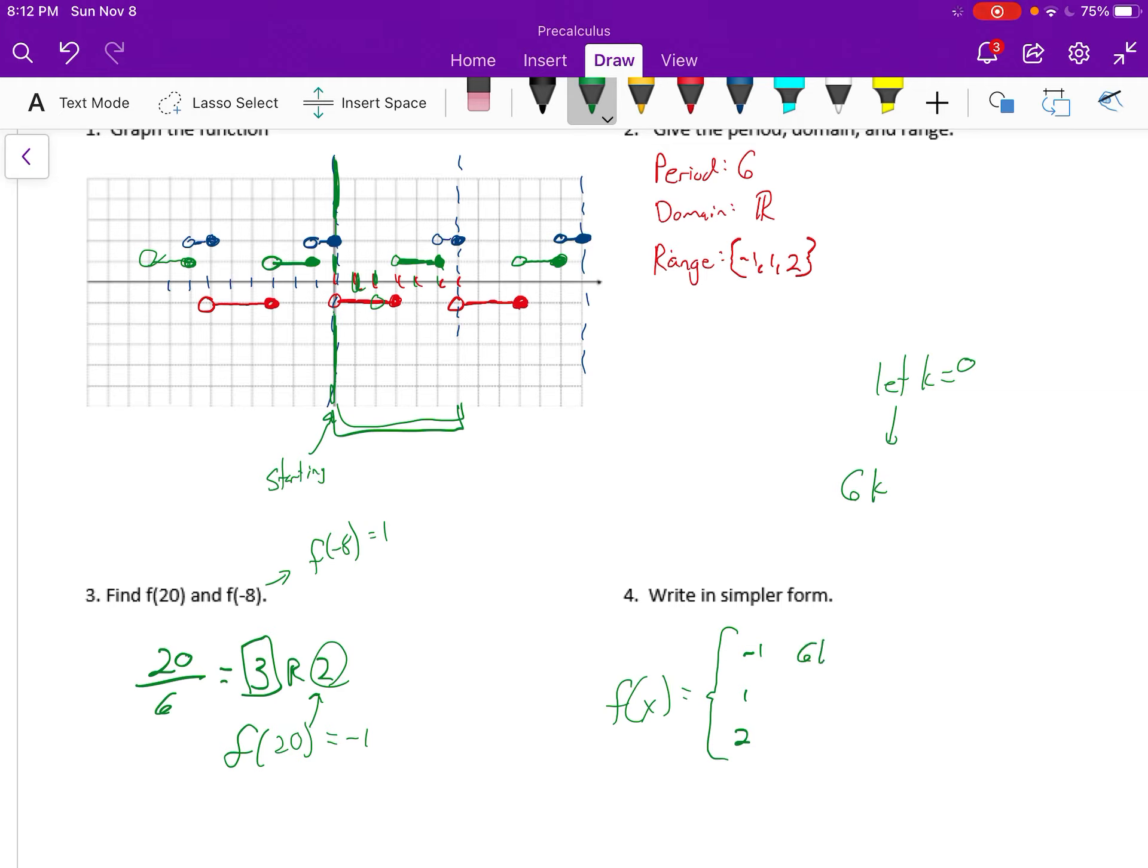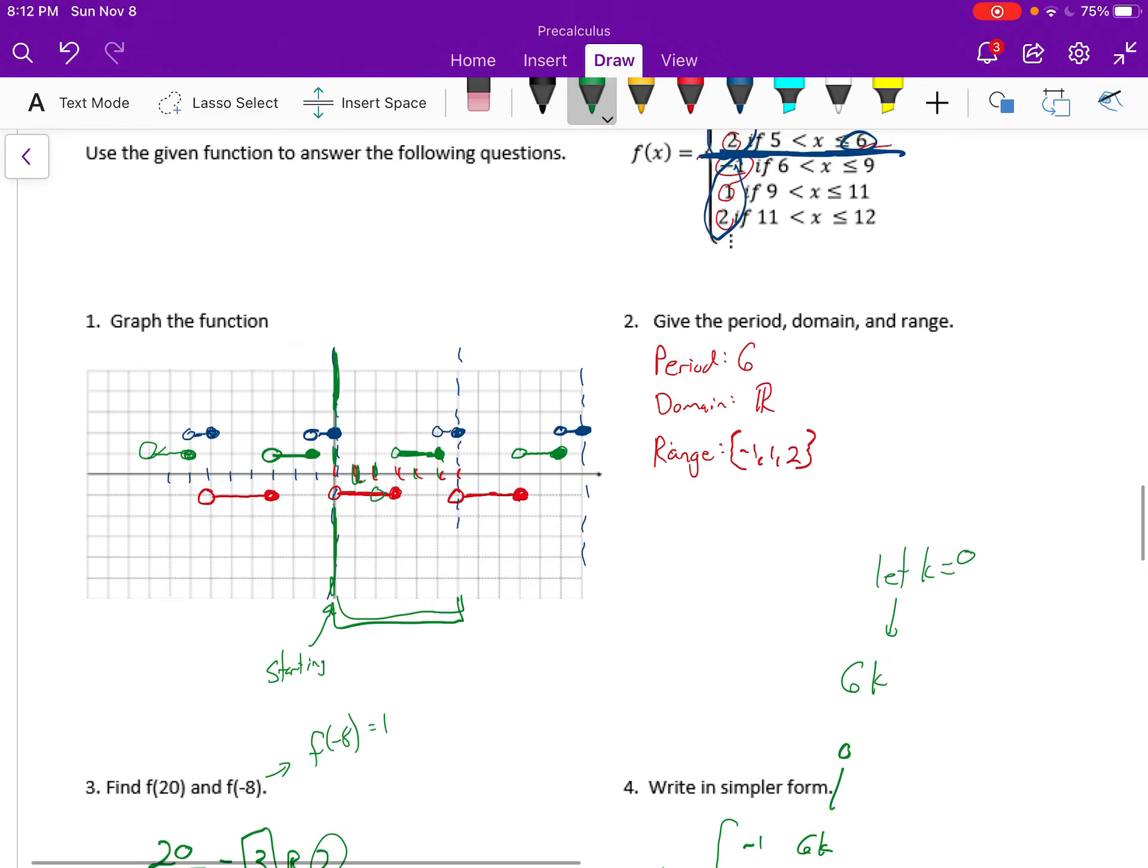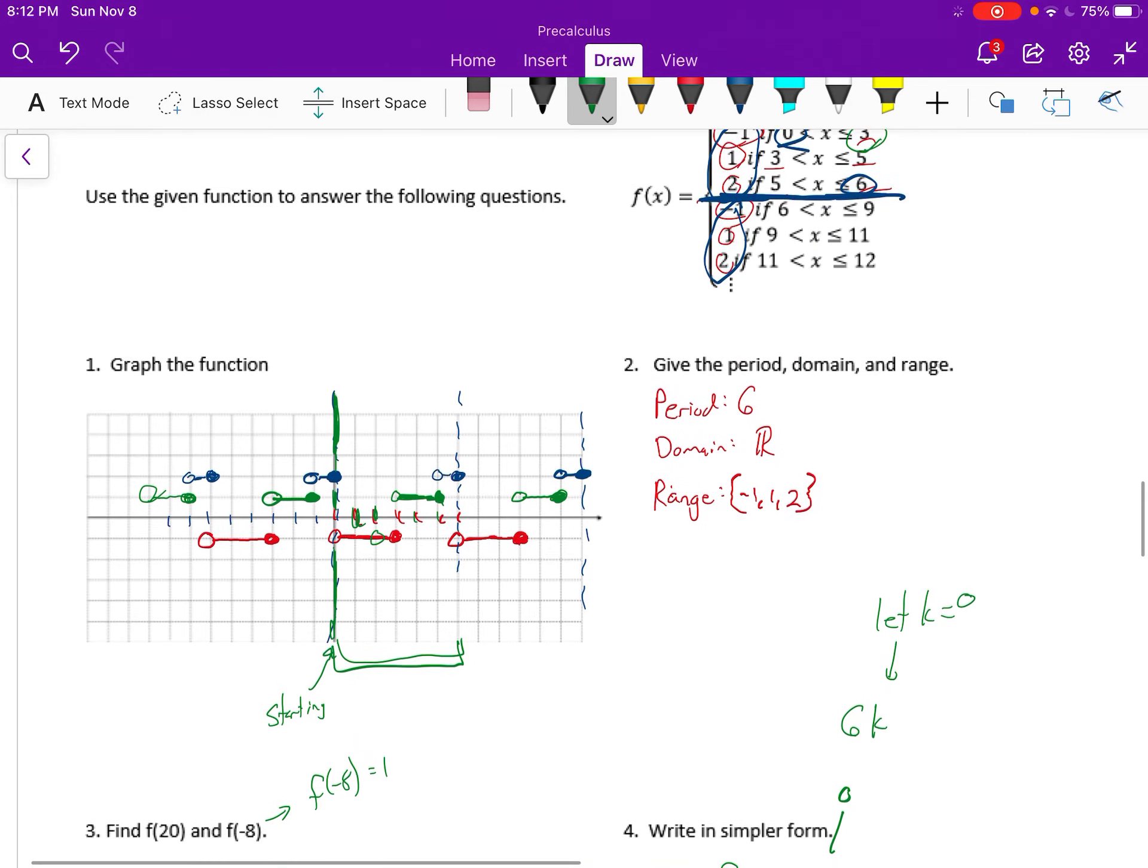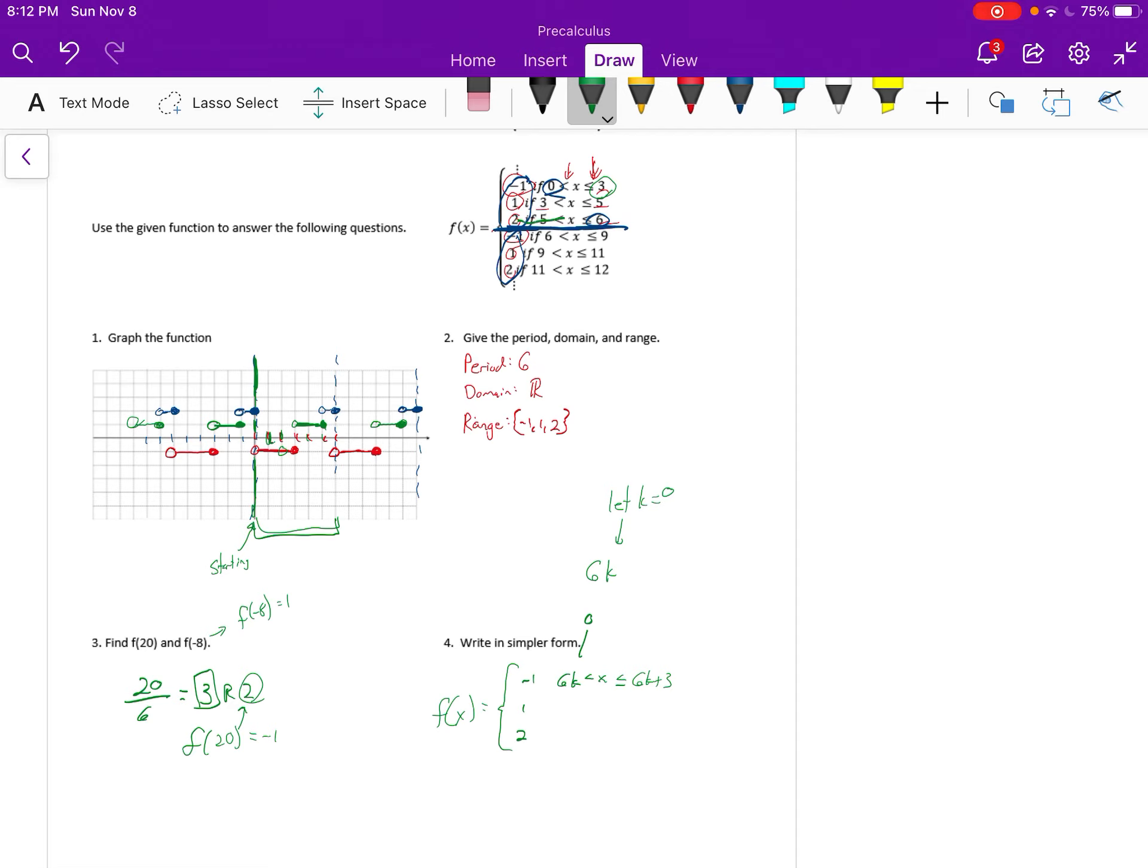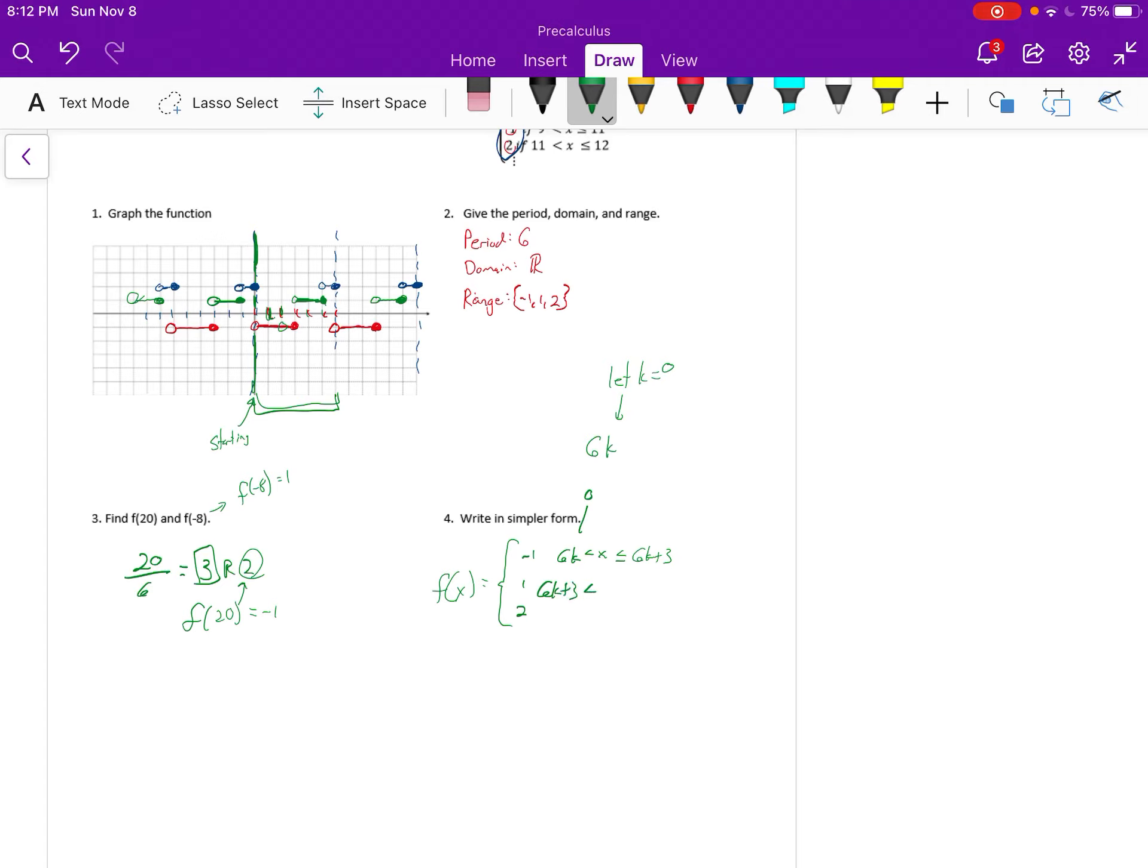Well, if k is zero, 6k would be zero, and that gives us our zero spot. And how do we get to this three? We just add three. So we can say this is 6k less than x, which is less than or equal to 6k plus three. Our next part here is from three to five. 6k plus three gives us the three is less than x, and how do we get from zero to five? It's 6k plus five. And then our last part is going to be from five, 6k plus five, to six, so we would do 6k plus six. And there it is written in a simpler form.